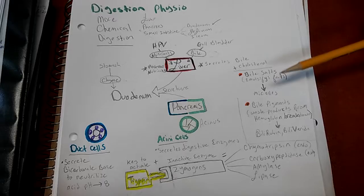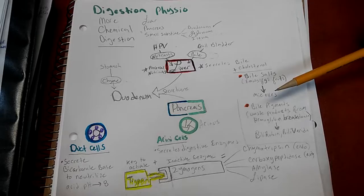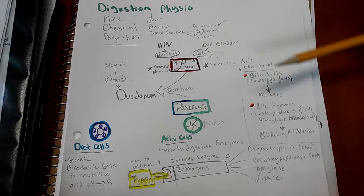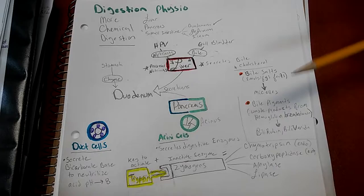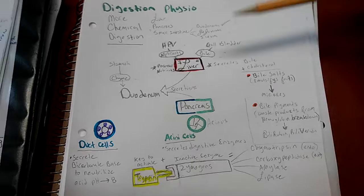After emulsifying fats from a glob into smaller pieces called micelles, the liver secretes bile pigments for the waste products from hemoglobin breakdown, which are bilirubin and biliverdin.